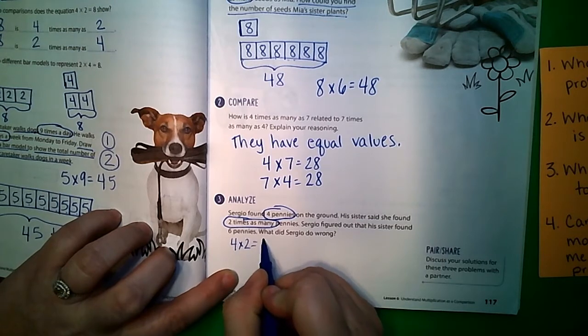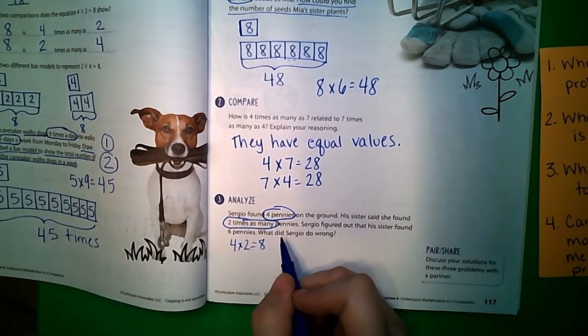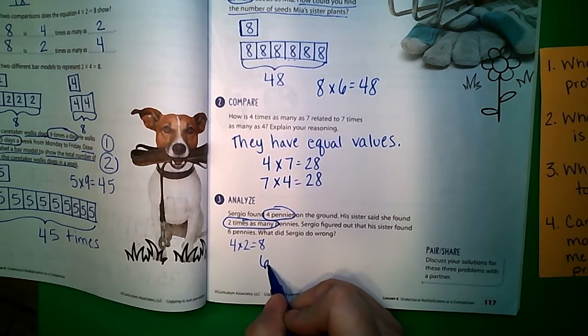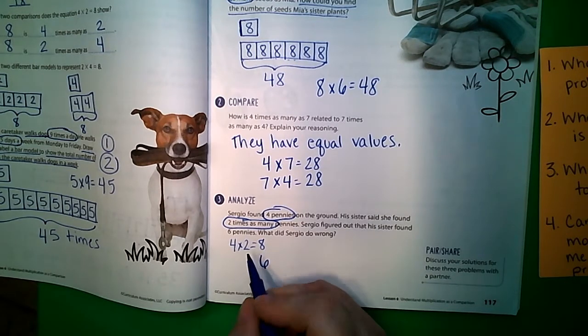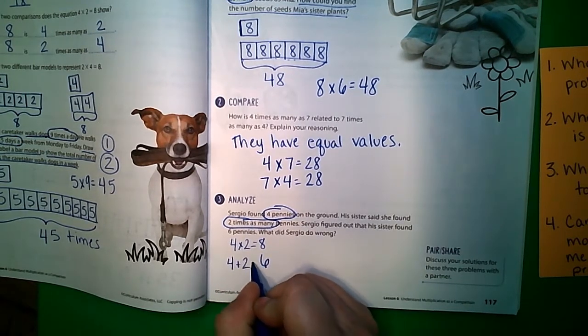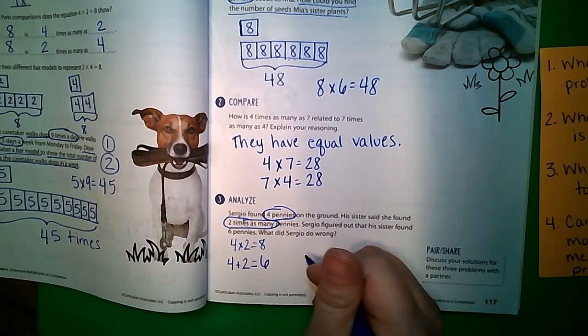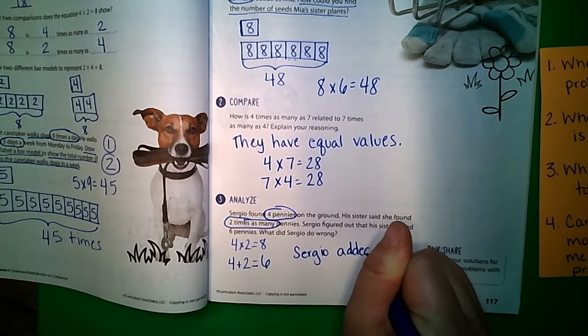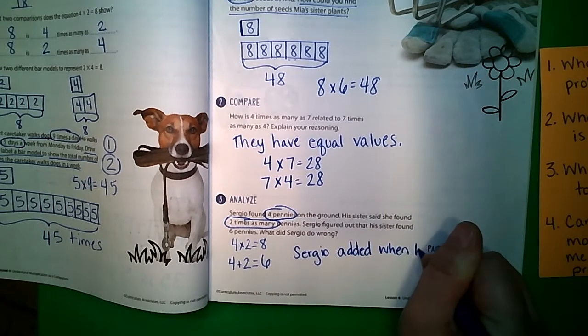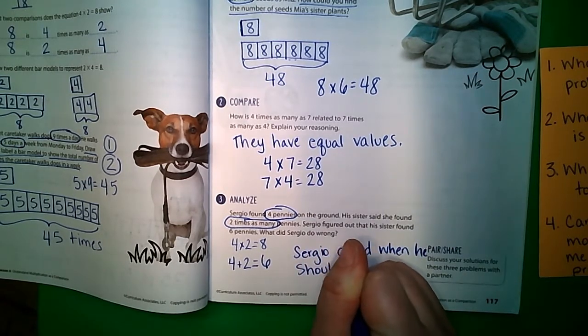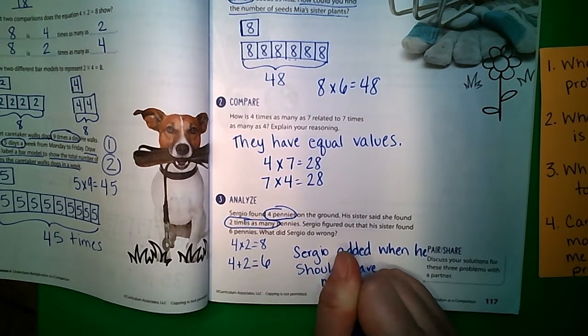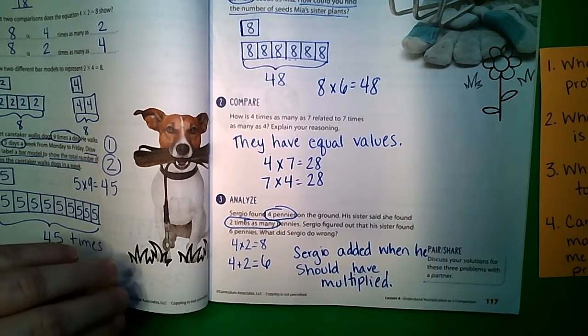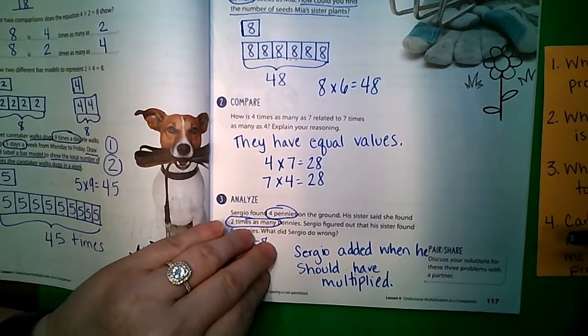So it should have been four times two equals eight, right? But instead of eight he got six. Can you see here what he did where he would have maybe gotten six instead of eight? Well, if you look right here, four plus two equals six. And so Sergio added when he should have multiplied, and that is the mistake that Sergio made.